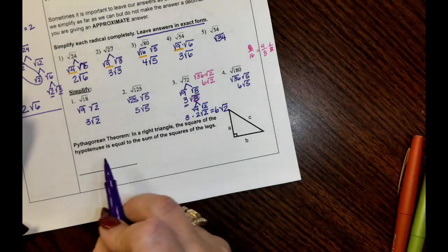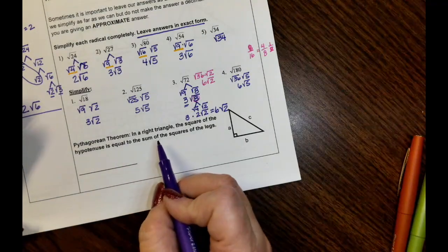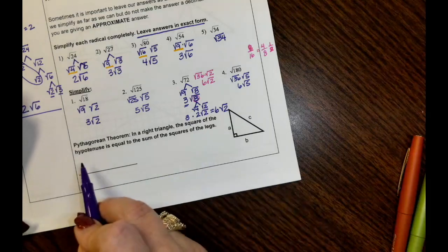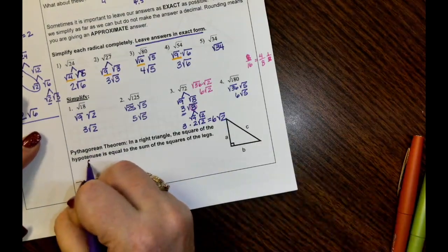Remind you what Pythagorean theorem is. If you have a right triangle, then the square of the hypotenuse, which the hypotenuse is C,